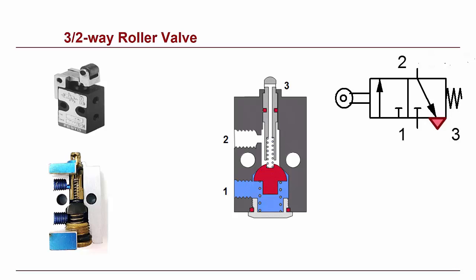Try to trace out the air path of the cross-sectional view and the symbol shown. They both correspond to each other.